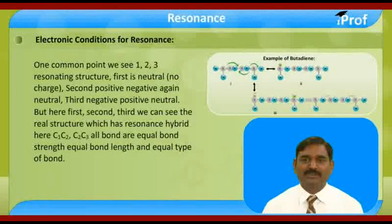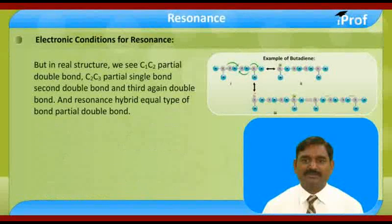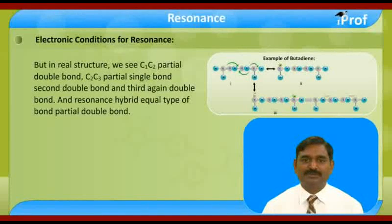The real resonance hybrid structure shows that all bonds — C1-C2, C2-C3 — are of equal bond strength and equal bond length. In the resonating structures, C1-C2 appears as a double bond in structure one and a single bond in structures two and three, while C2-C3 appears as a single bond in structure one and a double bond in structures two and three. In the resonance hybrid, both C1-C2 and C2-C3 are partial double bonds.